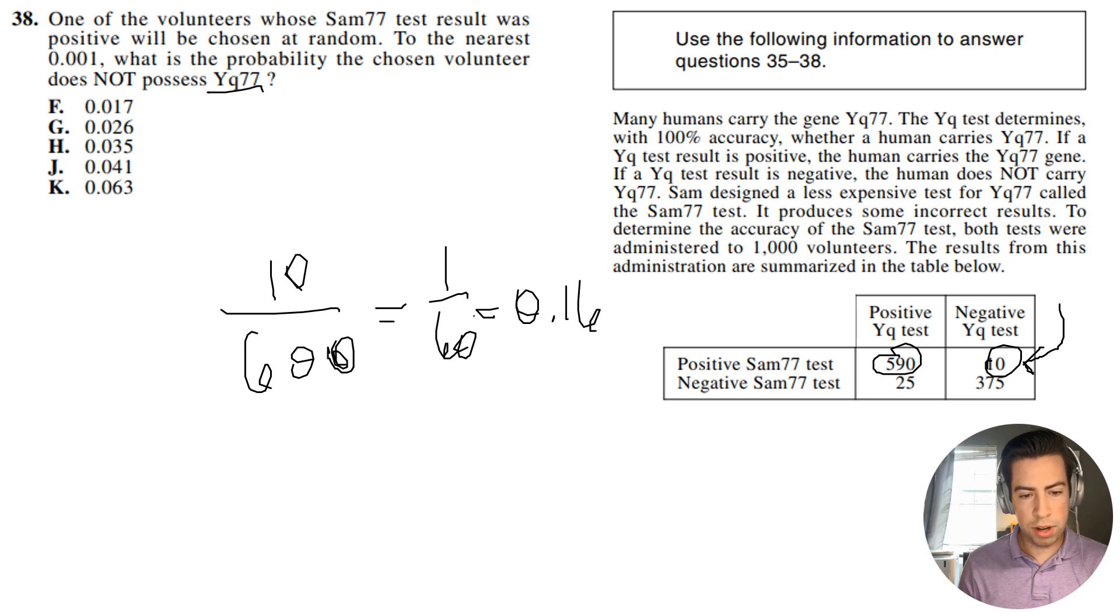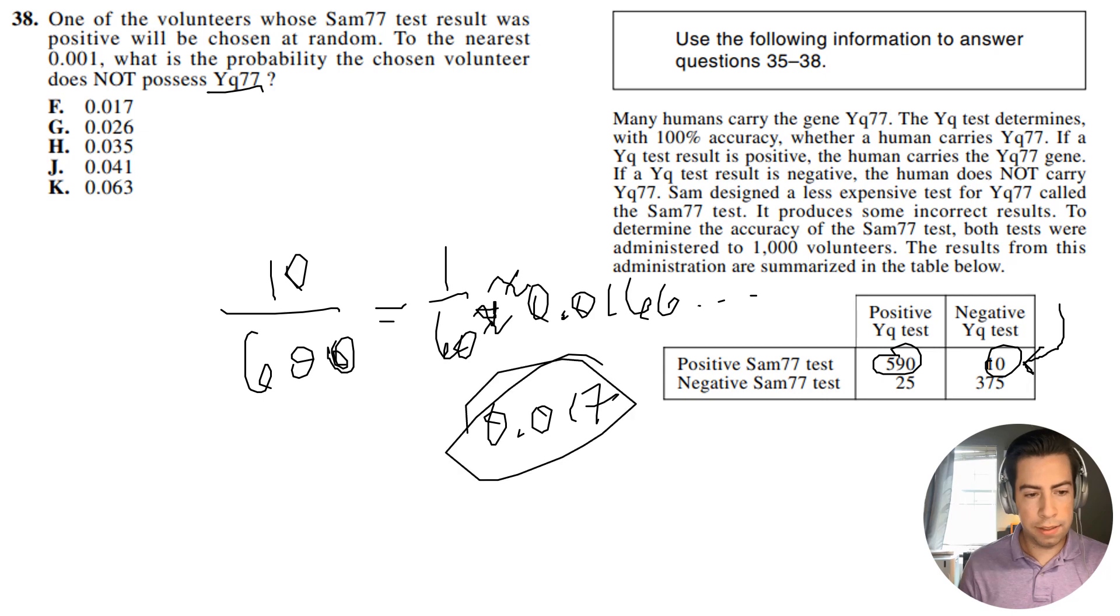So that's going to be 10 divided by 600, which is going to be 1 over 60, which is equal to 0.16. I think it's approximately 0.166. Oh, I'm sorry. I forgot an extra zero. This should be approximately 0.0166, and then it kind of goes on. But yeah, this is going to round to 0.017. And that is going to be our answer. So answer is going to be F. All right guys, if you have any questions, feel free to comment below. And I'll see you in the next video.